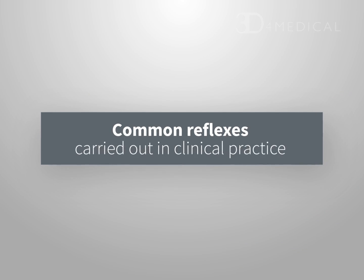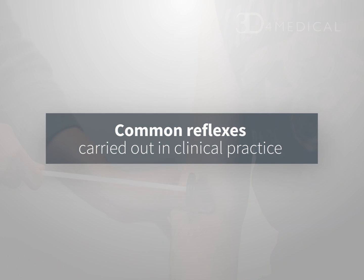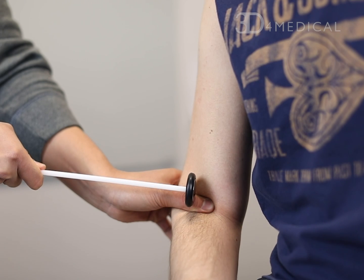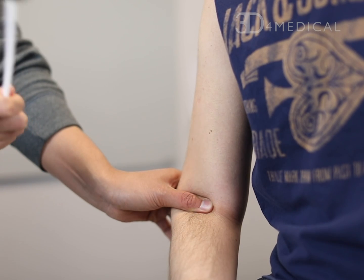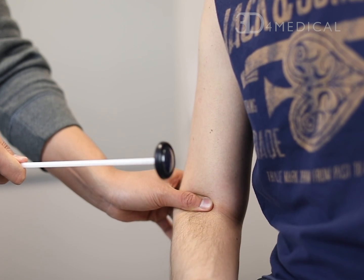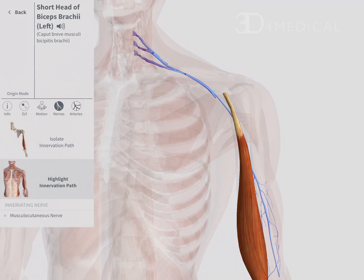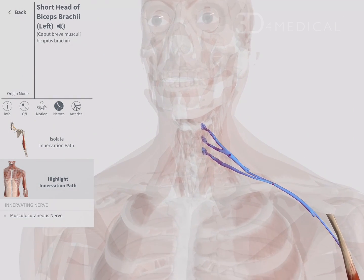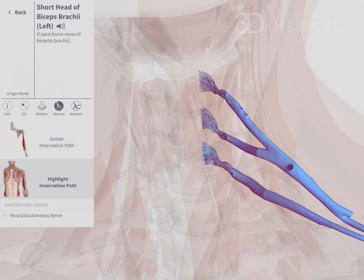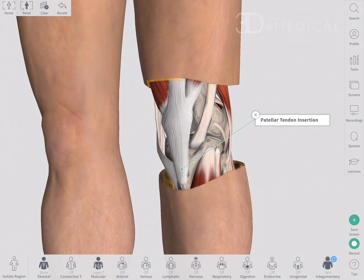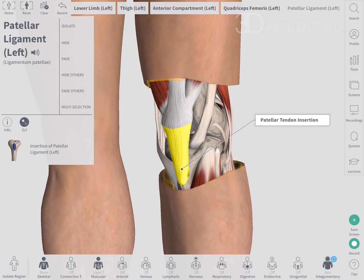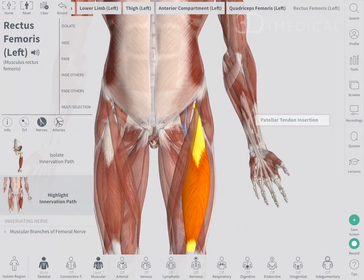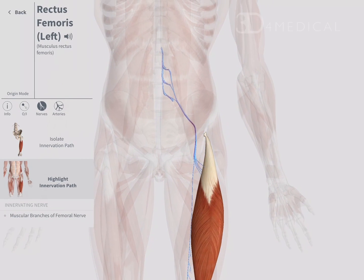Let's go through some of the common reflexes carried out in clinical practice. The biceps tendon will elicit a flexion jerk which assesses the integrity of C5 and C6 cervical spinal nerves. The patellar tendon insertion at the knee elicits a quadriceps twitch and a knee jerk via L3 and L4 lumbar spinal nerves.